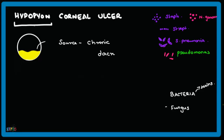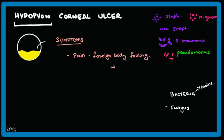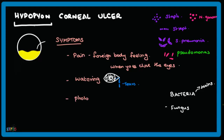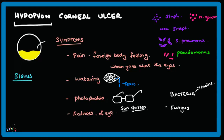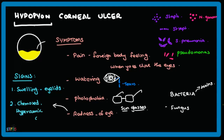The source is often chronic dacryocystitis for bacterial and fungal infections. The symptoms include pain and foreign body sensation when closing the eyes, watering, photophobia — for which sunglasses can be prescribed to the patient — and redness of the eye.